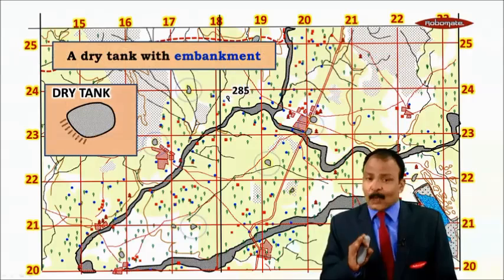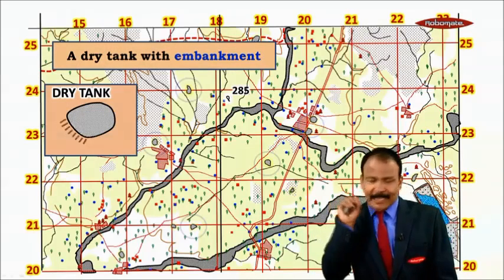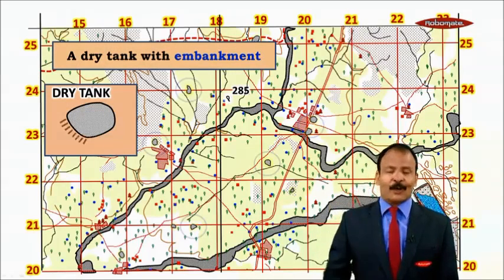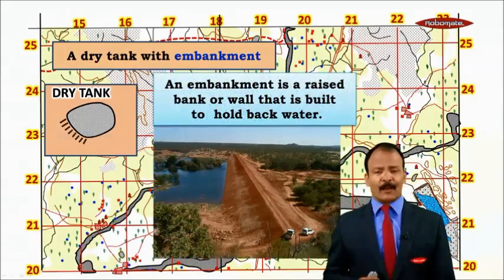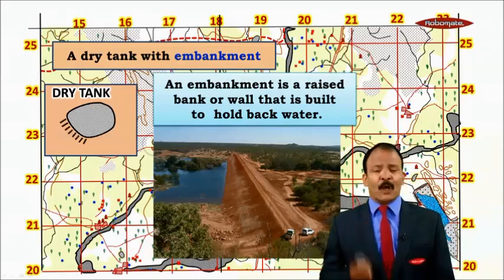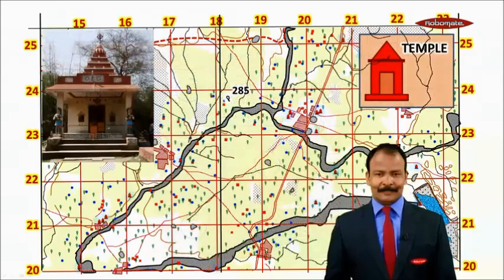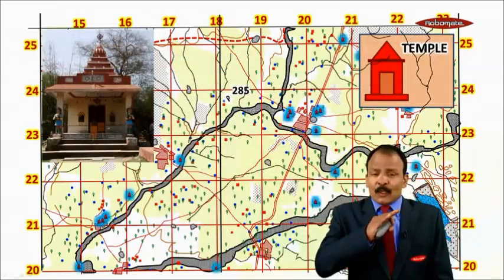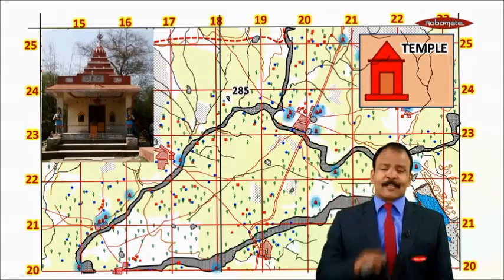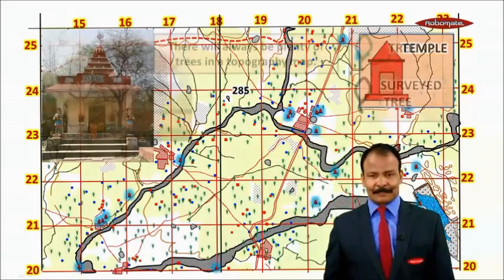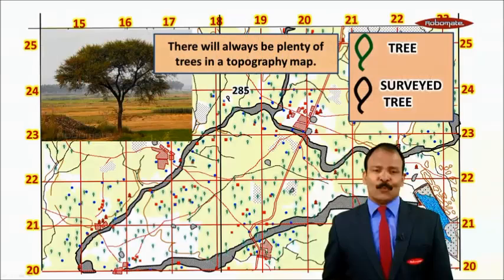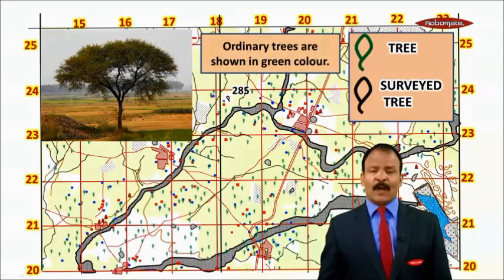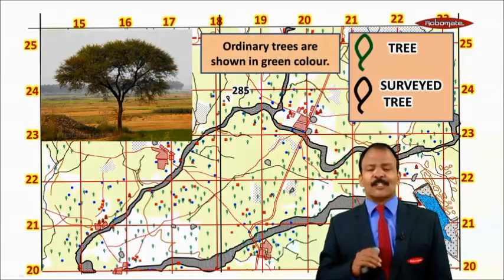A dry tank with an embankment — whenever there are lines at the border of the tank, it is called a dry tank with embankment. An embankment is a raised bank or wall built to hold back water. A topo map will also have plenty of temples, especially near villages, and trees — ordinary trees are shown in green color.